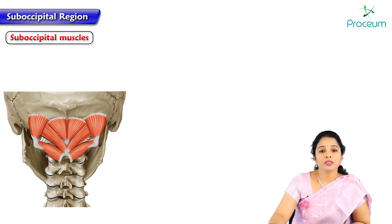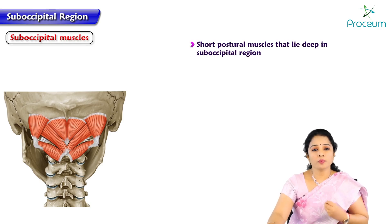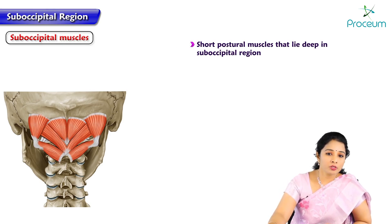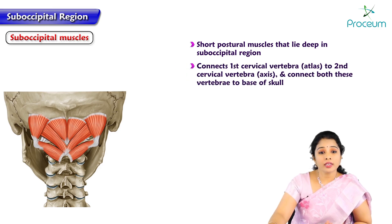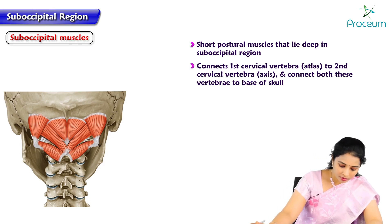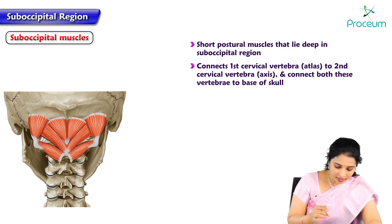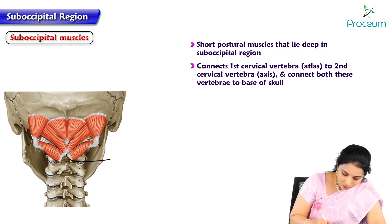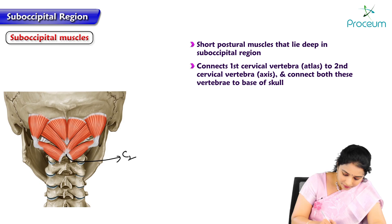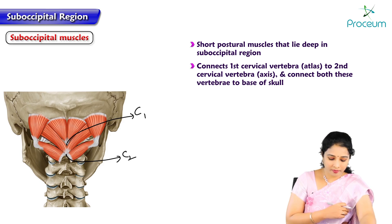The suboccipital muscles are short postural muscles that lie deep in the suboccipital region. They connect the first cervical vertebra, that is the atlas, to the second cervical vertebra, the axis. Here the muscles are covering the atlas and axis, and this is the spine of the second cervical vertebra. Here is the tubercle of C1, that is the atlas. They also connect both vertebrae to the base of the skull.